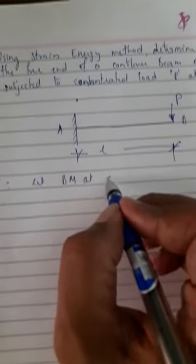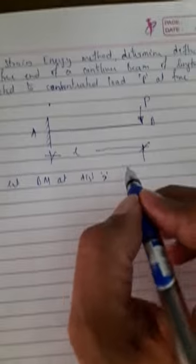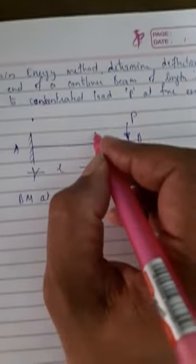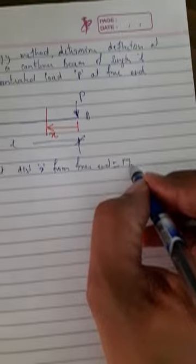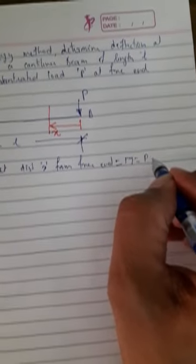Solution: Let the bending moment at distance x from the free end be found. I am going from the free end towards the fixed end, taking a section at distance x. Forget the part of the beam beyond that section — consider only this much. The bending moment developed at this section is load into perpendicular distance.